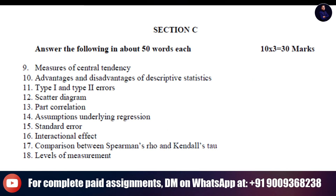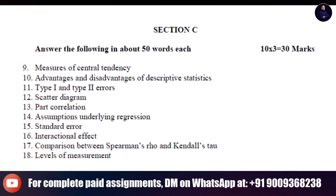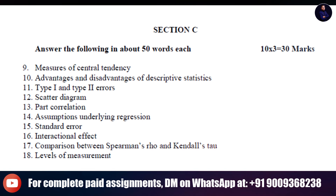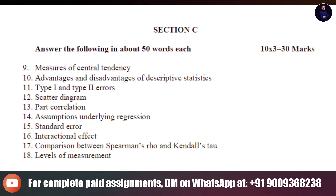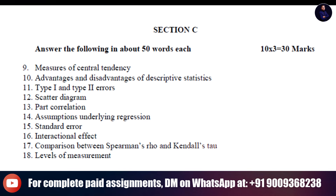Section C. Answer the following in about 50 words, each. 10 times 3 is equal to 30 marks. 9. Measures of central tendency. 10. Advantages and disadvantages of descriptive statistics. 11. Type 1 and type 2 errors. 12. Scatter diagram. 13. Part correlation.